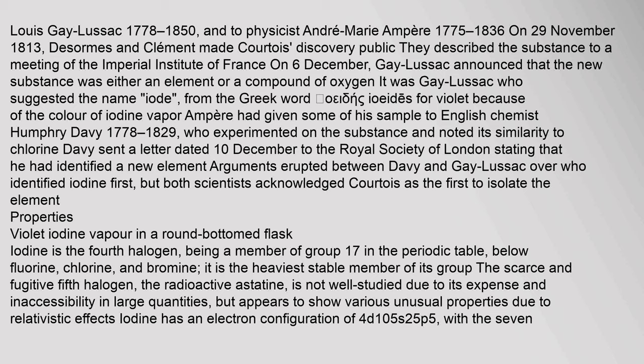Properties: Iodine is the fourth halogen, being a member of group 17 in the periodic table, below fluorine, chlorine, and bromine — it is the heaviest stable member of its group. The scarce and fugitive fifth halogen, the radioactive astatine, is not well studied due to its expense and inaccessibility in large quantities, but appears to show various unusual properties due to relativistic effects.